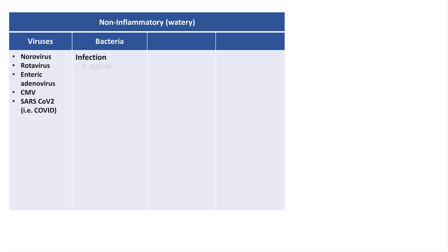Bacterial etiologies include C. difficile, an important bacteria that classically causes diarrhea following antibiotic usage, which can feel a bit paradoxical. What happens is antibiotic therapy substantially reduces the load of so-called good bacteria in the gut. Since C. diff is not affected by most antibiotics, any C. diff bacteria present at the time will flourish in the absence of competition for nutrients.